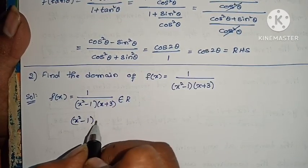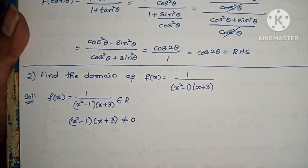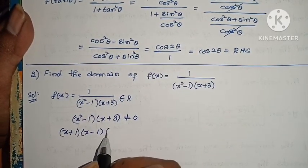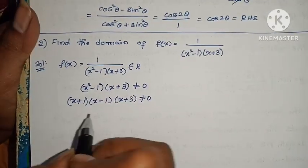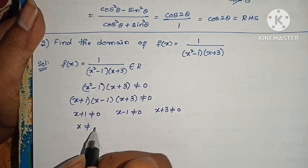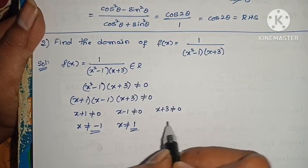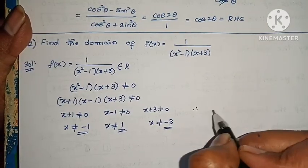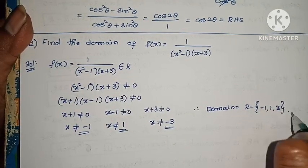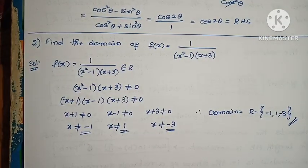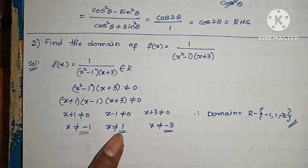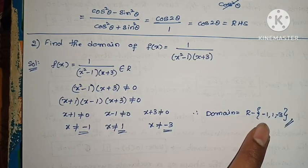Next problem: finding the domain. The denominator (x² - 1)(x + 3) must not equal 0. So (x + 1)(x - 1)(x + 3) ≠ 0, meaning x + 1 ≠ 0, x - 1 ≠ 0, x + 3 ≠ 0. Therefore x ≠ -1, x ≠ 1, x ≠ -3. Domain equals R minus {-1, 1, -3}. Using a² - b² = (a+b)(a-b) to factorize the denominator.